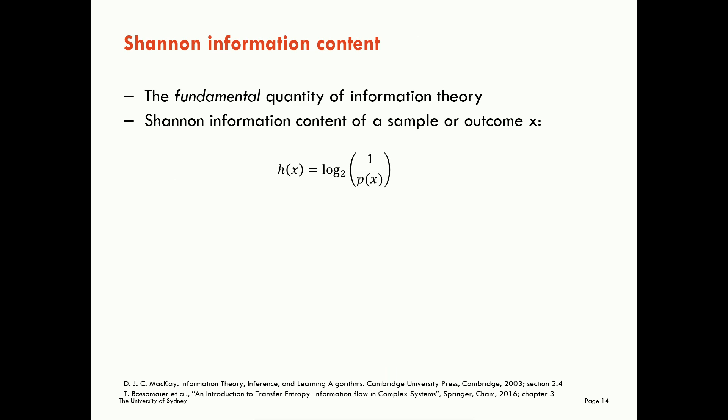Okay. The fundamental quantity of information theory, then, is what's called the Shannon information content. This refers to the information content of a sample or outcome, a specific sample or outcome, little x, from our sample space. It is simply the log of the inverse probability of x. This is our Shannon information content. Here, the units of Shannon information content are in bits for when we take the log in base 2. But we don't have to. We could take the log to a different base. We could take it to base e, in which case we call the units nats, short for natural units.